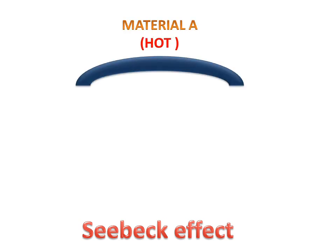Today we will discuss the Seebeck effect. Firstly, we will discuss the parts and working of the Seebeck effect. We have a material A, which is a hot material — this is a hot material plate.